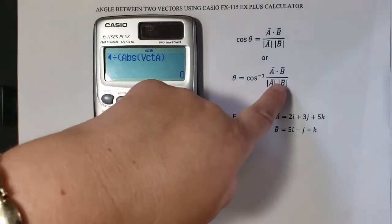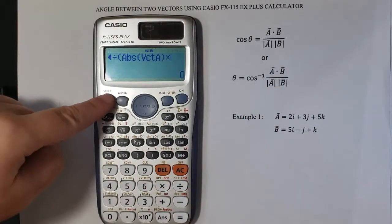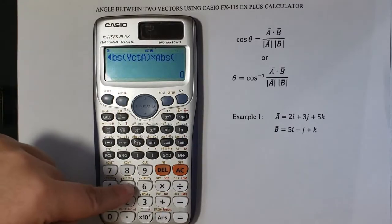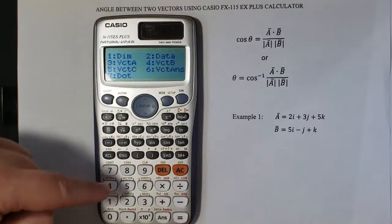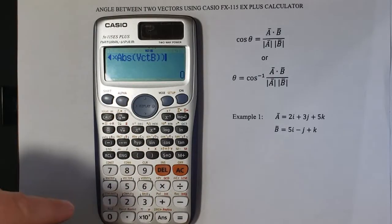And then a product, times the absolute or the magnitude of vector B. SHIFT again, vector and then 4 for vector B. Close and close again.